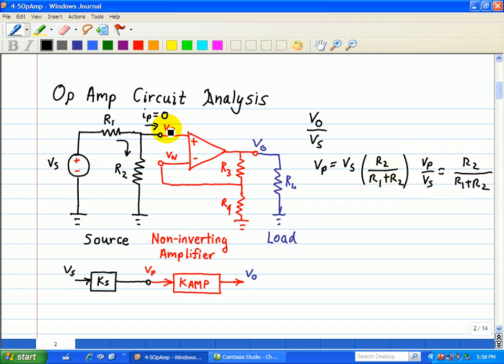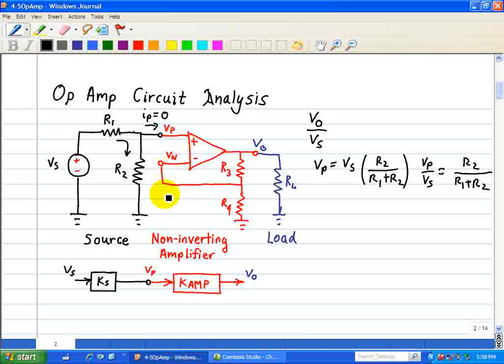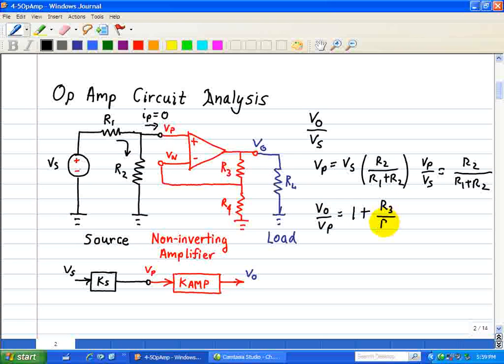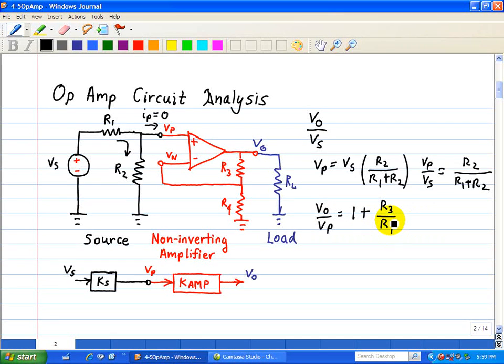Now what's the relationship between Vp and V0? Well, we recognize that this configuration is a non-inverting amplifier and we know that V0 divided by Vp is equal to 1 plus the feedback resistor R3 all over R4 in this example.